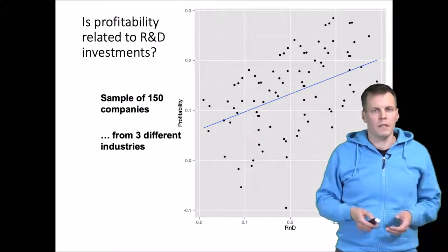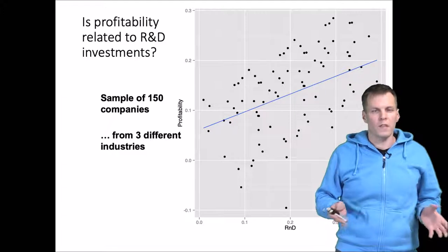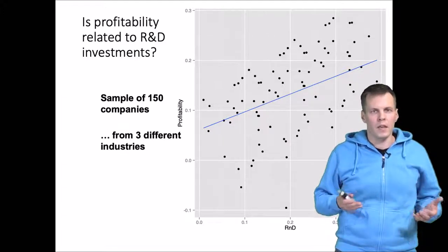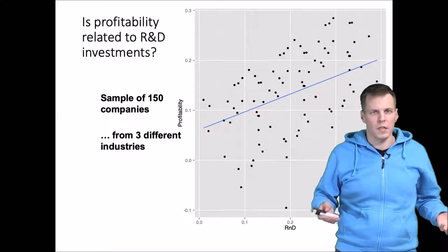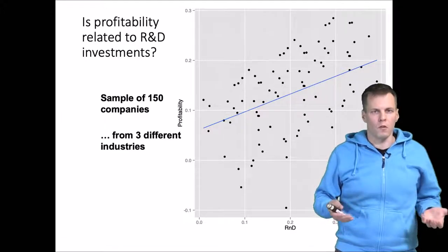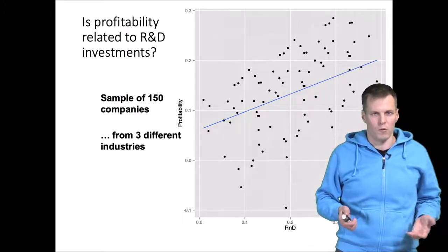What if I say that these data, these 150 data points, are actually three industries with 50 firms each? Would that change the conclusion of the direction or the existence of the effect?